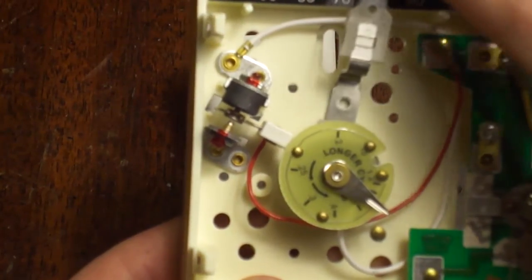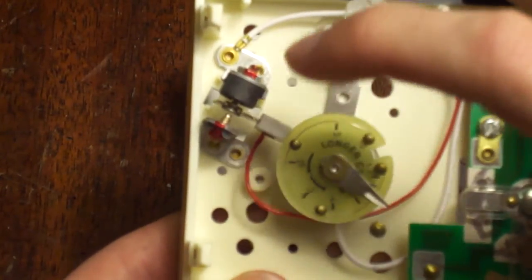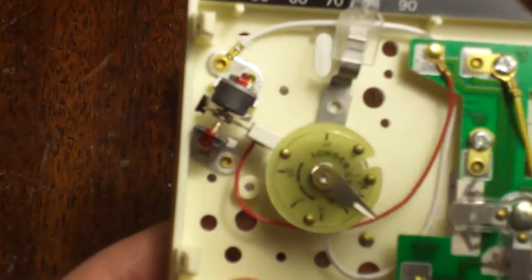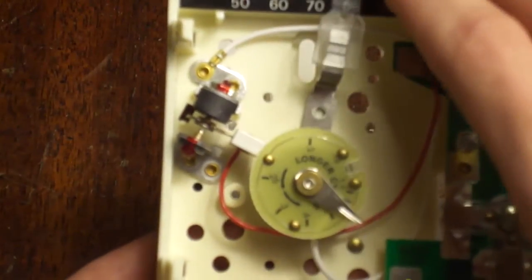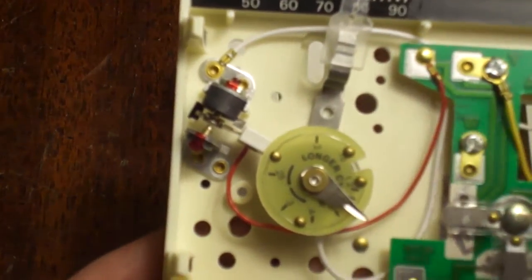You can see it bouncing back and forth. This is a magnet that pulls it toward, it keeps the tension, it's basically like a weight, like the mercury would be in a tip switch.